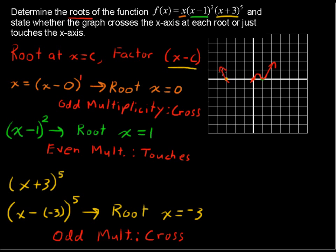I don't really know, without further investigation, what the rest of the graph looks like, if this goes down a lot farther, or if there's some wiggles. But I do know that it crosses at x equals negative 3, it crosses at x equals 0, and it just touches the x-axis when x equals 1.